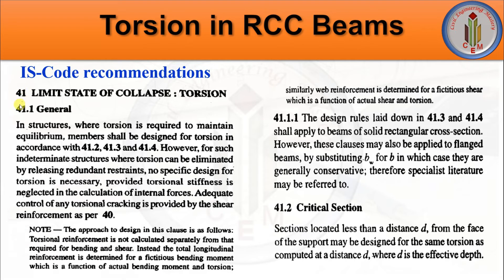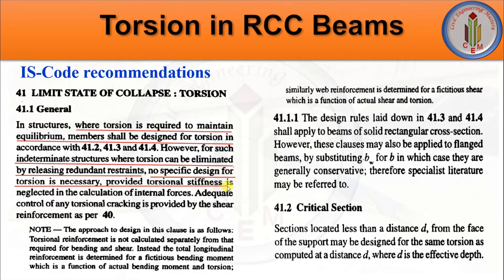Now let's look at the IS 456 code recommendations. Clause 41 covers the limit state of collapse for torsion. It states: where torsion is required to maintain equilibrium, members shall be designed for torsion in accordance with clauses 41.2, 41.3, and 41.4. However, for statically indeterminate structures where torsion can be eliminated by releasing redundant restraints - that is secondary torsion - no specific design for torsion is necessary, provided torsional stiffness is neglected in calculation of internal forces.